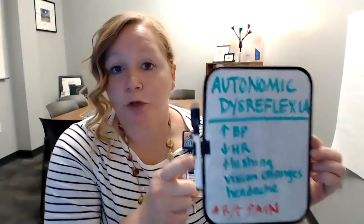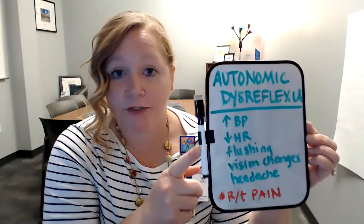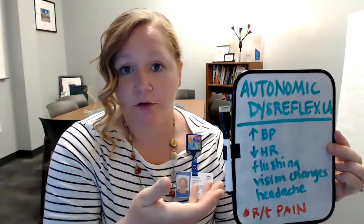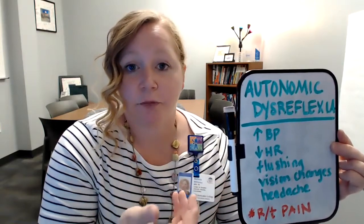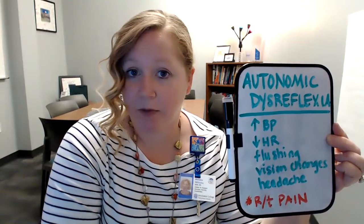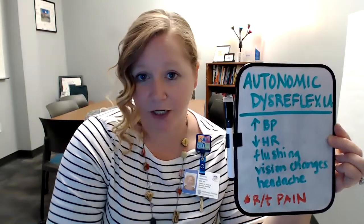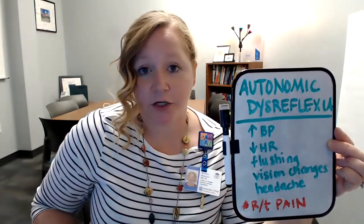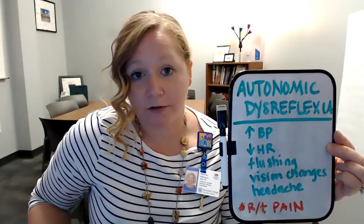But internally, you still have a pain response — it's a dysreflexic response. So with autonomic dysreflexia, your blood pressure goes up and your heart rate goes down, which is different than the normal pain response. Along with that, you can get vision changes, a really bad headache, and flushing. That's related to pain that's happening, usually abdominal in nature — a distended bladder, a fecal impaction, and there are a lot of other causes.